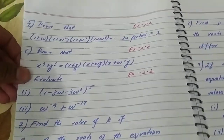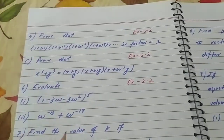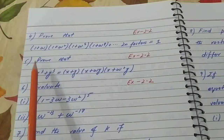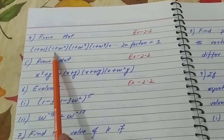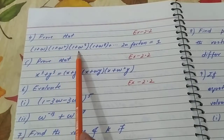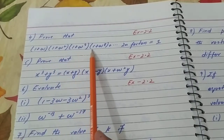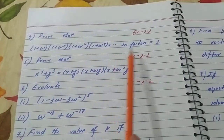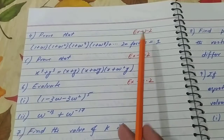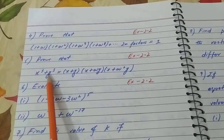Question number 4: Prove that (1 + ω)(1 + ω²)(1 + ω⁴)(1 + ω⁸) up to 2n factors equals 1. This is from Exercise 2.2.